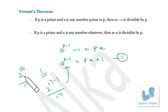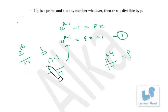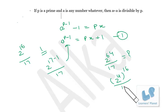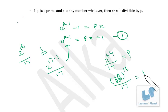Now suppose instead of 16 you have 2 raised to 64, divided by 17 — what is the remainder? We can reduce this. Since A can be any number, 2 raised to 64 is the same as (2 raised to 4) raised to 16, which is 16 raised to 16. So 16 raised to 16 divided by 17 gives remainder 1.